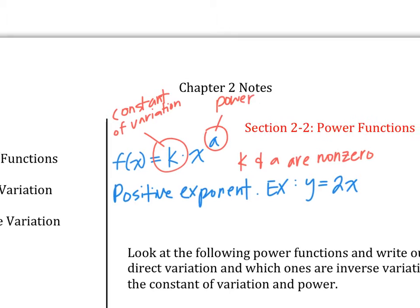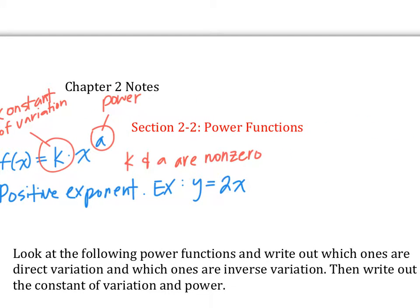And how do you know what's going to happen? If the exponent is positive. Another example would be y equals square root of x. What is the power on square root x? It's one half — yes. The power is one half. One half is a positive number, so it's going to have direct variation. As x increases, y also increases. When x gets bigger — 1, 2, 3, 4, 5 — y also gets bigger. That's called direct variation.